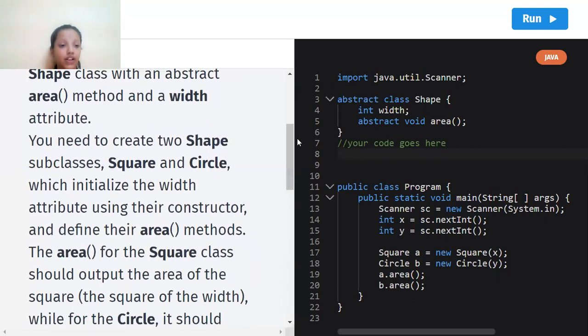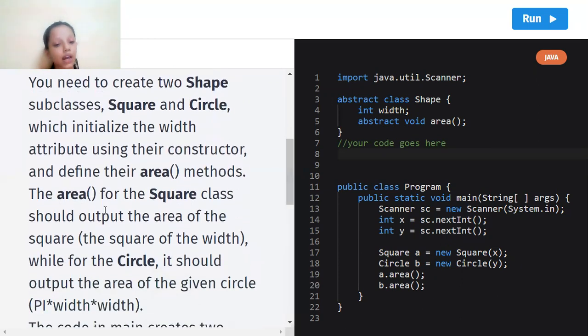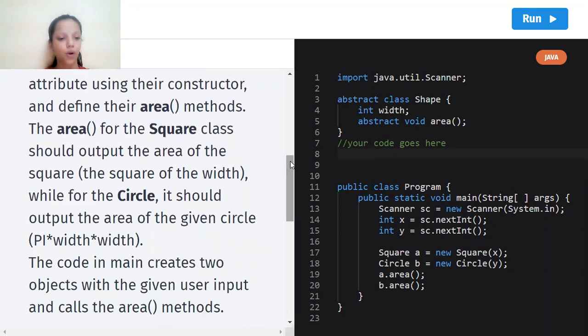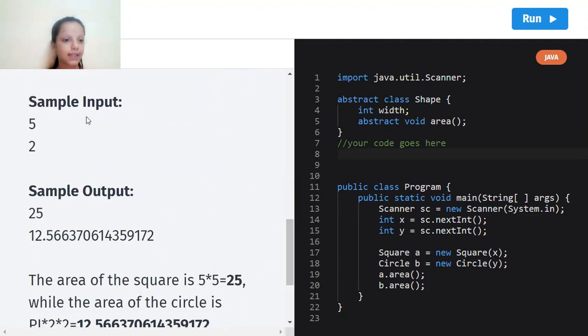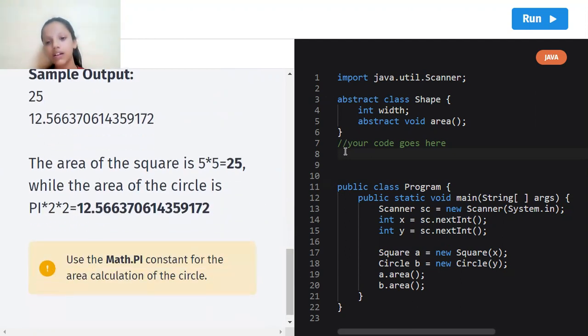What we have to do is create two subclasses, Square and Circle, and we have to know their areas. For the square we're going to use formula width into width, which is the square of width. And for the circle we are going to use formula pi into width into width. You can refer to the sample input and output. Now let's begin with the code. Don't forget to like, share, subscribe to my channel and press the notification bell for further updates.